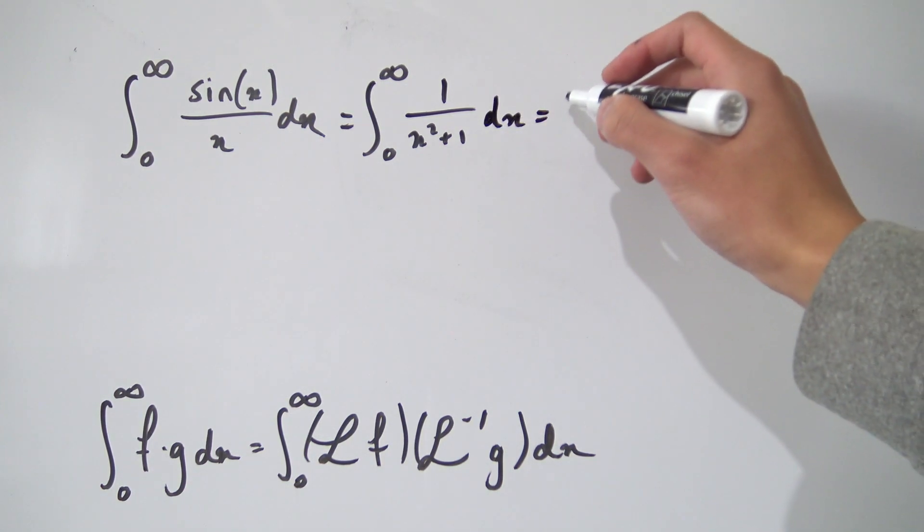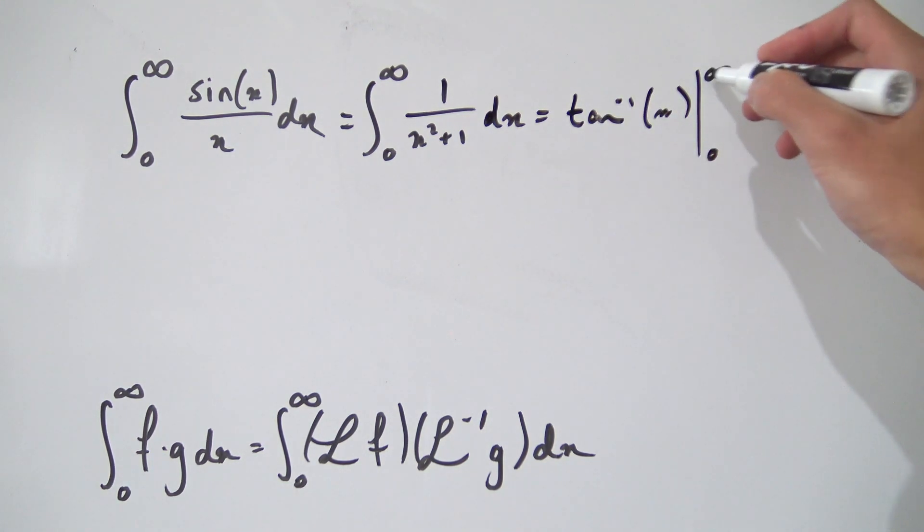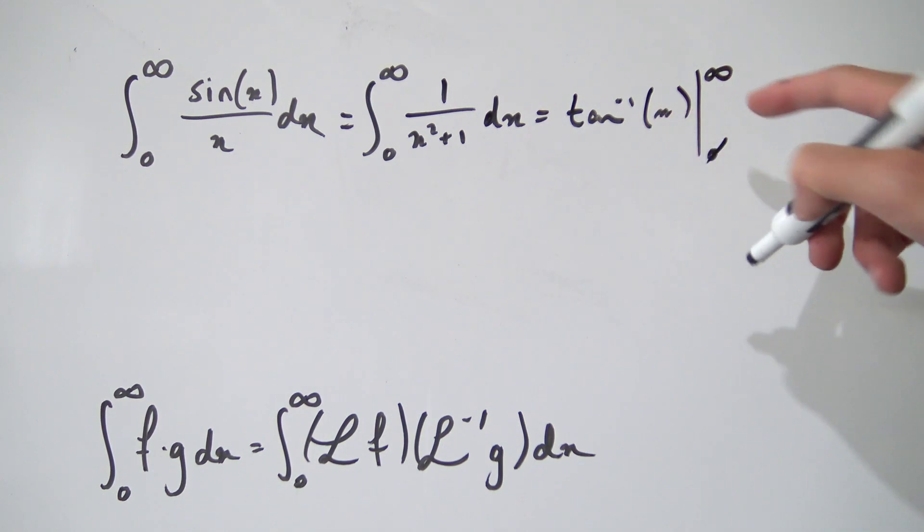This is just the arctangent integral, so we're going to have arctangent of x evaluated from zero to infinity. Arctangent of zero is 0 and arctangent of infinity is pi over 2. We are done, that's the Dirichlet integral.